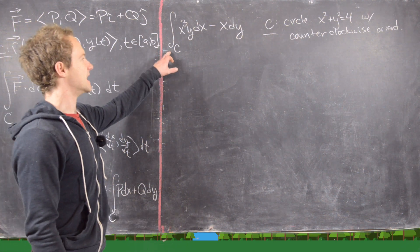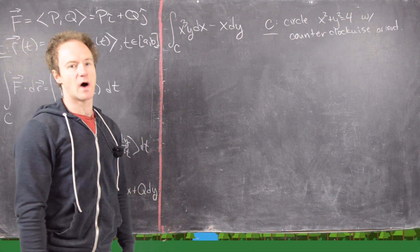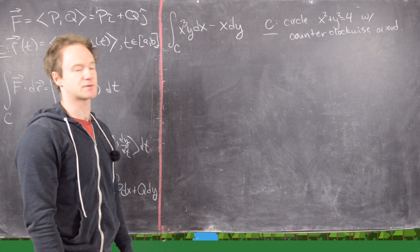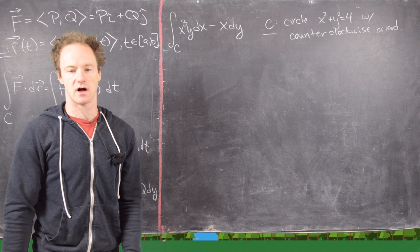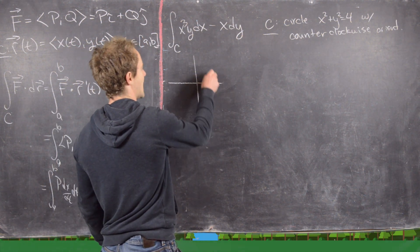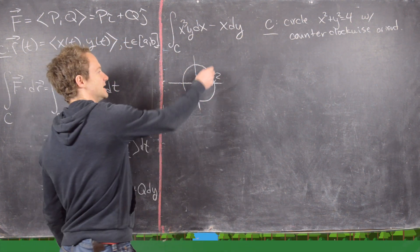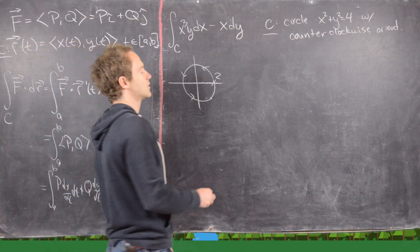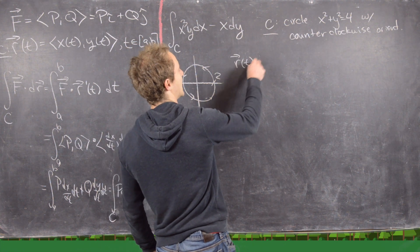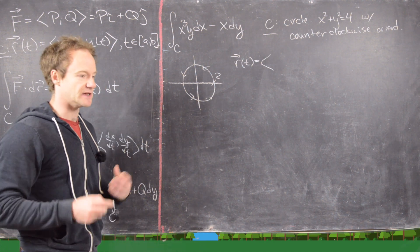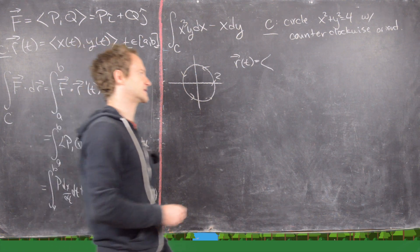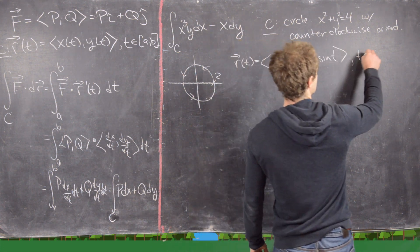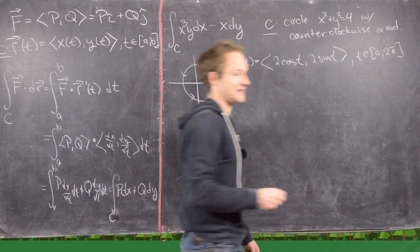Our first example: evaluate the integral over curve C of x³y dx − x dy, where C is the circle of radius 2 (x² + y² = 4) oriented counterclockwise. We want the entire circle, so motivated by polar coordinates we parametrize as R(t) = (2cos t, 2sin t) with t from 0 to 2π.